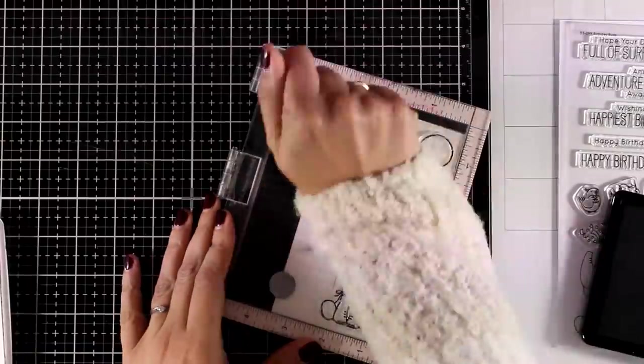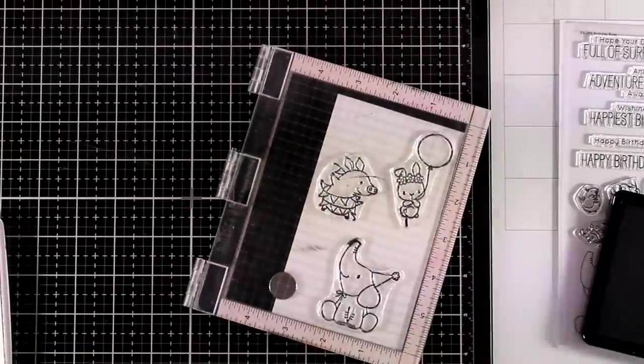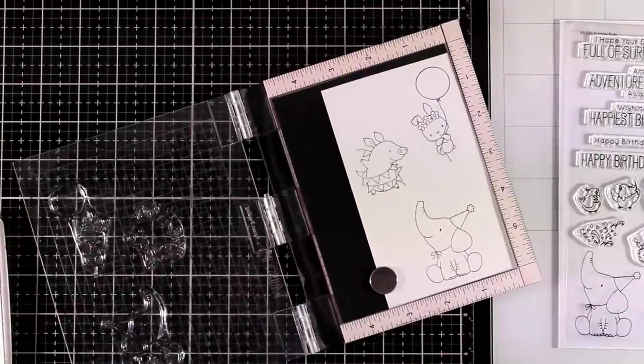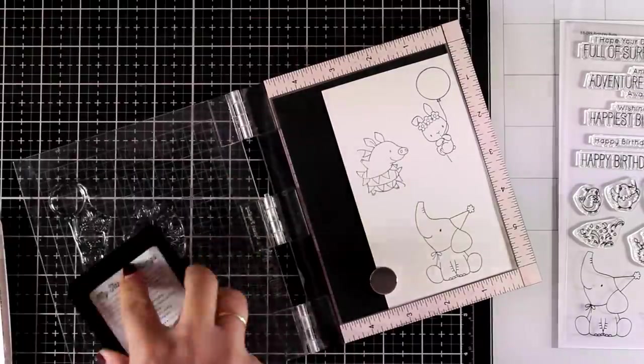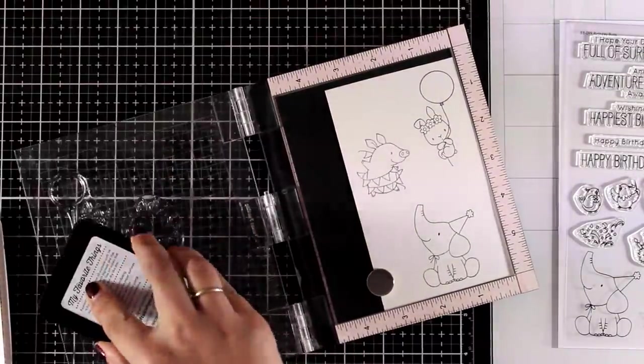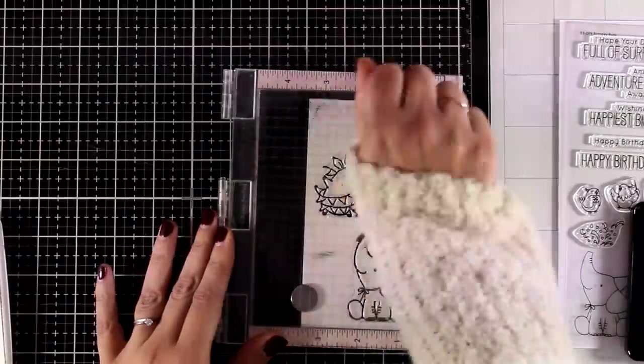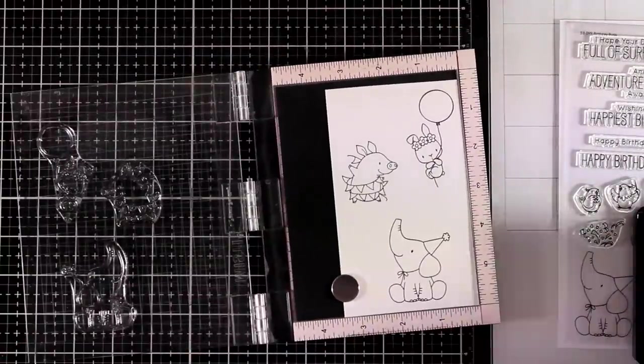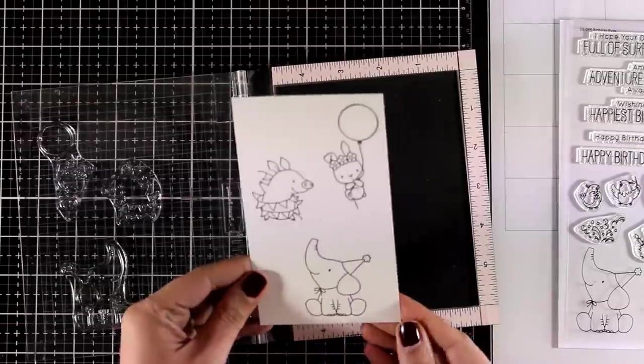Since I'm planning to make three different birthday cards, I'm going to use three of the images from my stamp set: the elephant, the little pig, and the bunny. So I'm going to stamp that with permanent black ink just because I will be using water on top of it and I don't want this to be smudged.